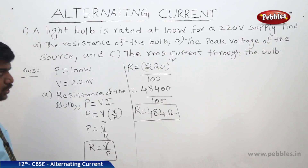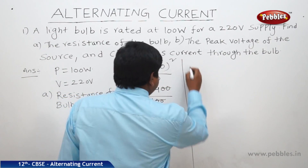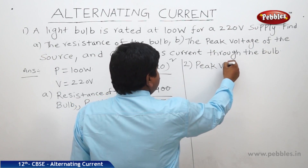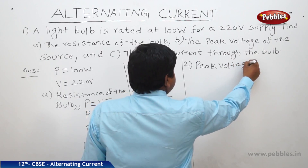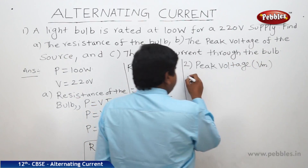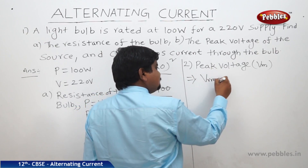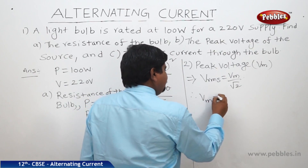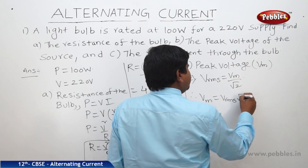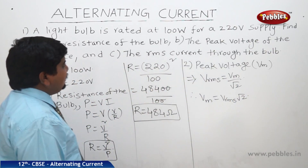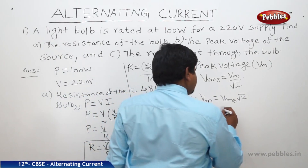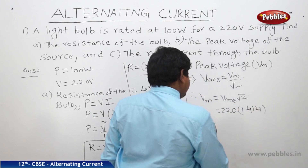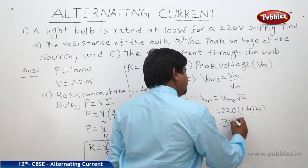The second part is to find the peak voltage of the source, Vm. We know that V_RMS = Vm / √2, therefore Vm = V_RMS × √2. The V_RMS value is 220 volts, and √2 = 1.414. Therefore the peak voltage Vm = 311 volts.